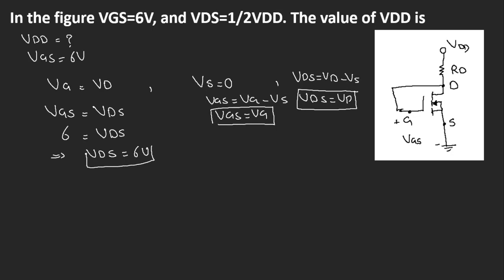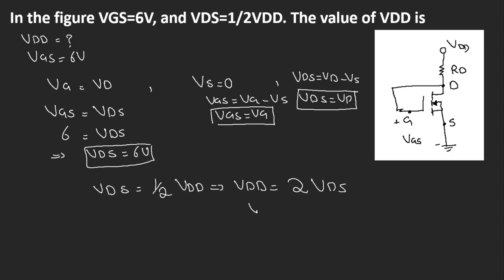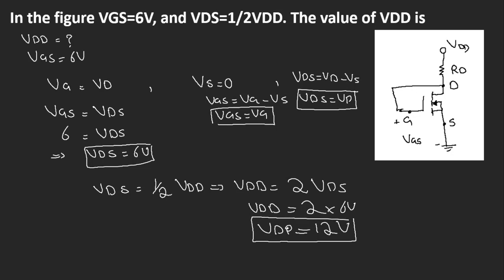Now that we have found Vds, it is very easy to find Vdd. Vds is given as half of Vdd, which implies that Vdd is equal to two times Vds. Vds has been found to be 6 volts, so Vdd equals 2 multiplied by 6 volts, which is 12 volts. So the value of Vdd in this figure is 12 volts — that's our answer. Thank you.